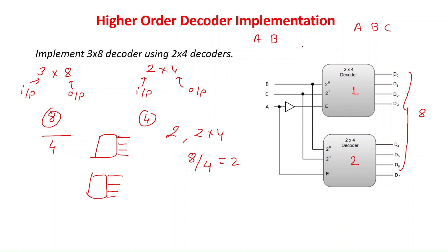So how do we design this? In this, A is our MSB. We will consider this MSB as an enable input — it will behave like an enable input. A is the enable input for both decoders. However, one decoder receives A complemented and the other receives A direct. If the enable input is 1, then only that decoder will generate the output; if enable input is 0, the decoder will not produce any output. So when A is 0, the first decoder produces the output; when A is 1, the second decoder produces the output. Only one decoder will produce output at a time.